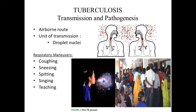Tuberculosis is transmitted via the airborne route and the unit of transmission is the droplet nuclei. Transmission occurs through various respiratory maneuvers like coughing, sneezing, spitting, singing, or even talking, and also by consumption of milk or milk products that contain tuberculosis bacilli.